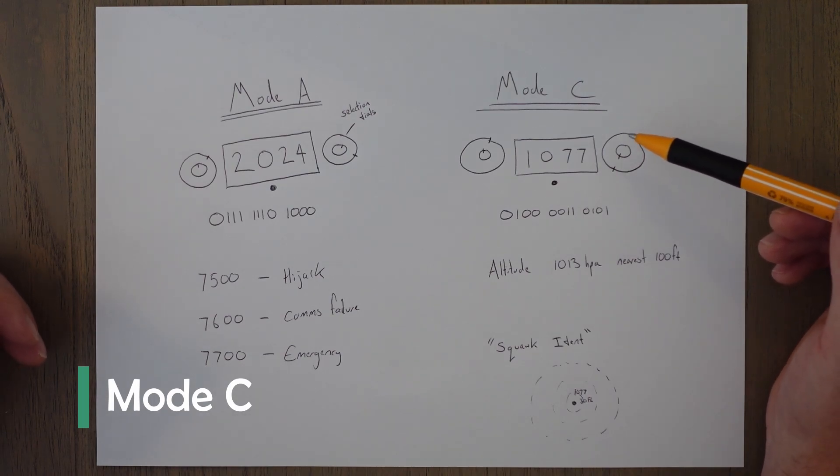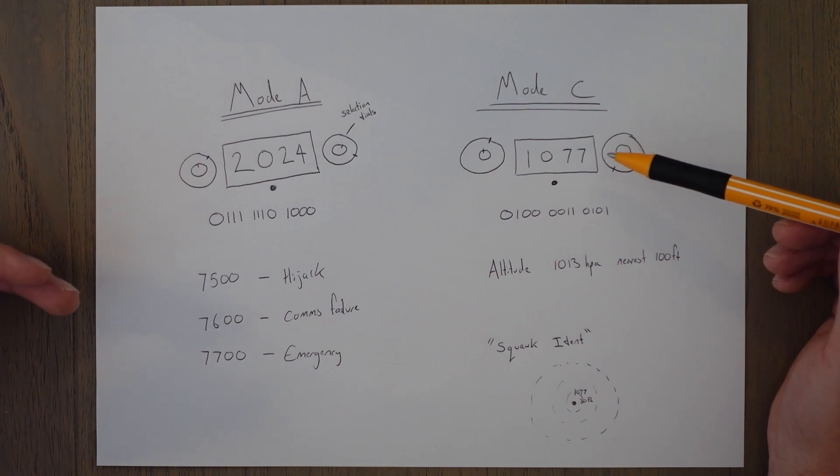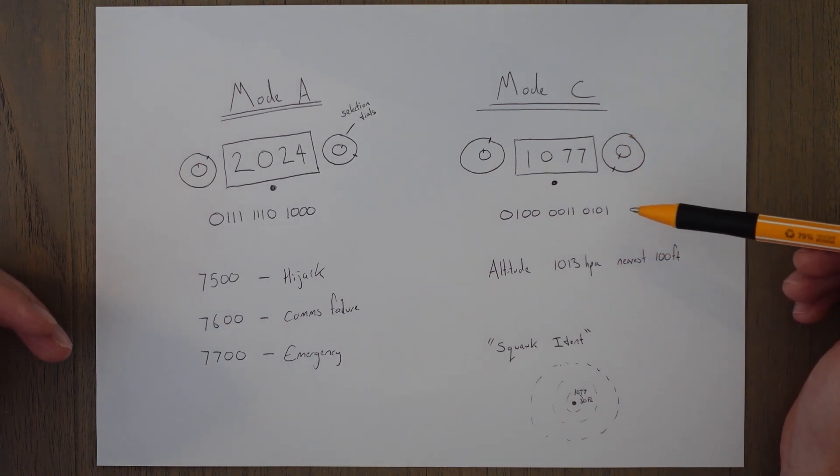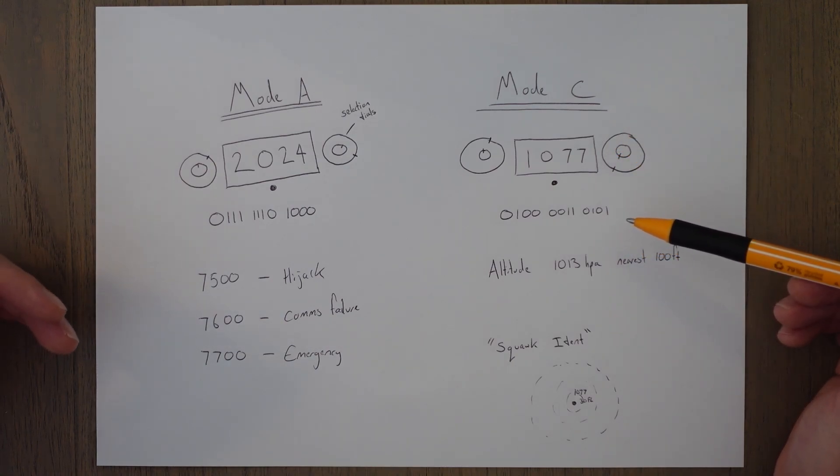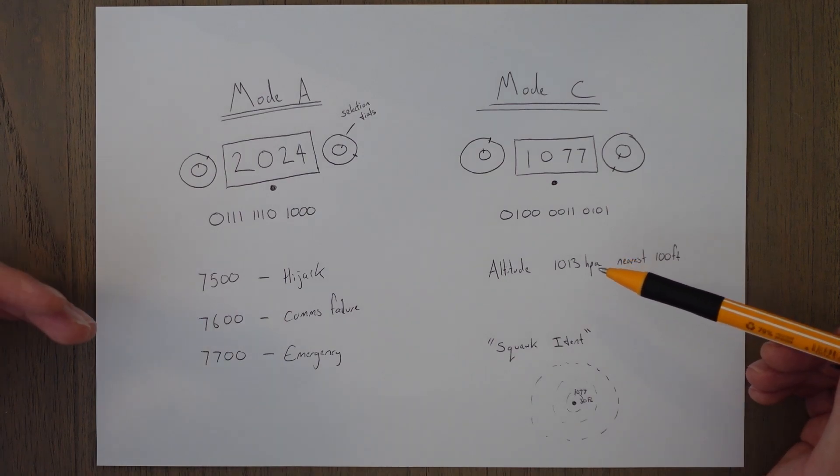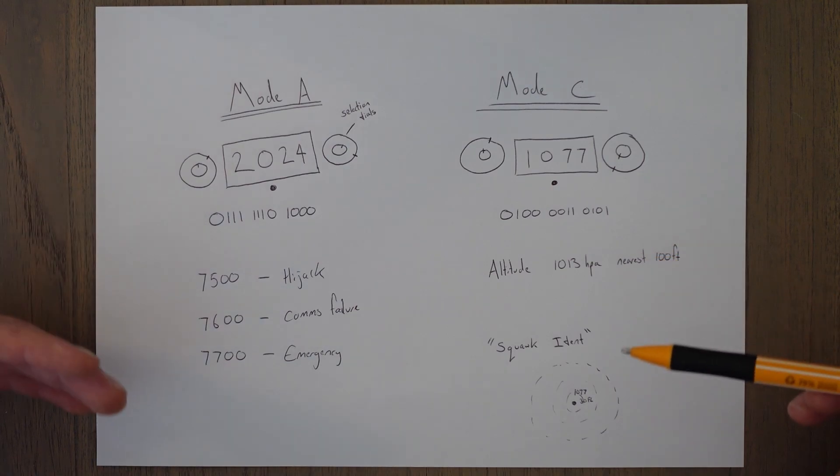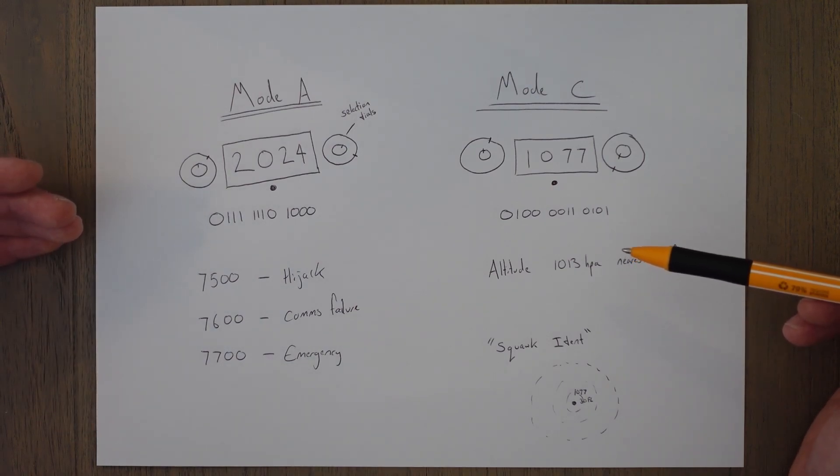With Mode C transponders, which is the next level up of transponder, we get that four digit code functionality as well as altitude information for the controller. The feed of this altitude is taken directly from the altimeter and is always referenced to the standard 1013 hectopascal altimeter setting, which gives pressure altitudes as a readout for the controllers rounded to the nearest 100 feet. When the controller gets the altitude reading, they will check it is within 300 feet of any assigned cleared level they have given you, and if it's greater than this, then there might be an error either in your flying or in the system.